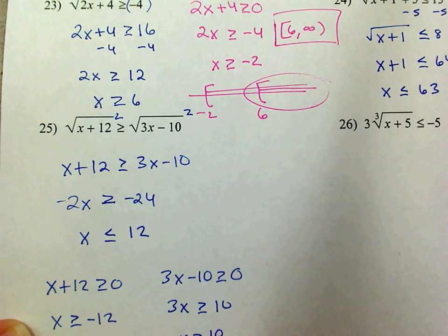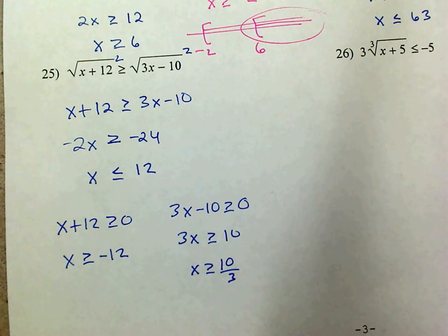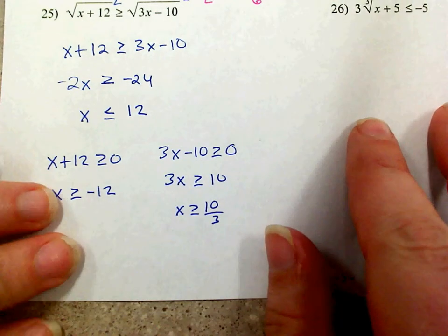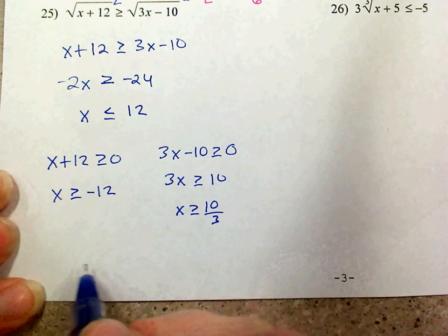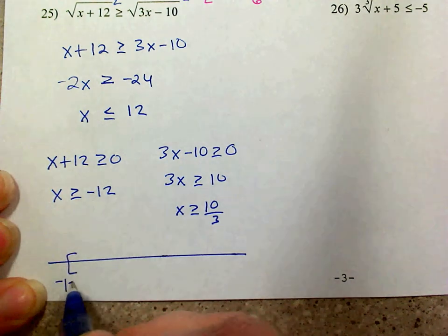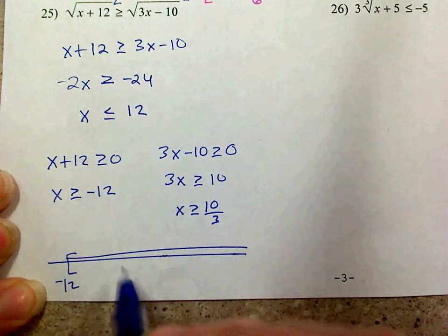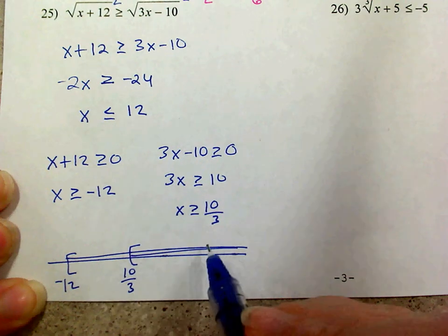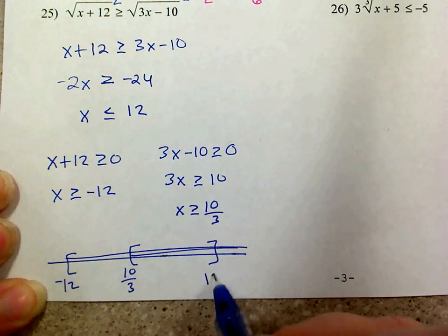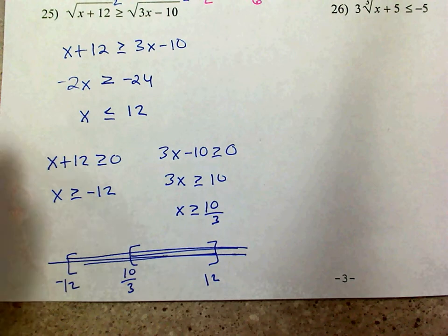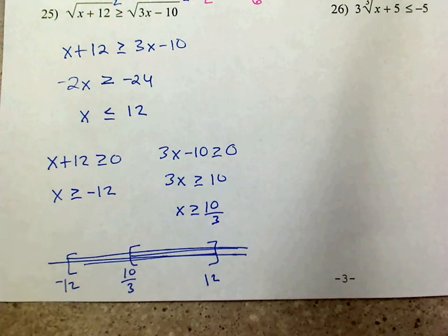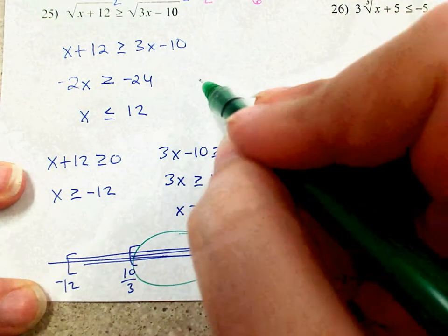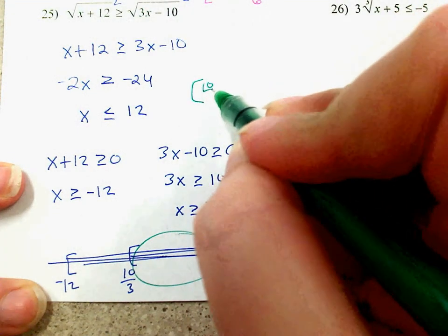On my number line, I have x greater than or equal to negative 12, greater than or equal to 10 thirds, and less than or equal to 12. The only time all three are satisfied is between 10 thirds and 12. So my answer is from 10 thirds to 12.